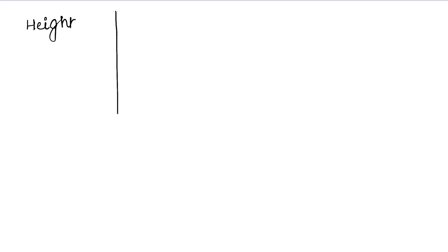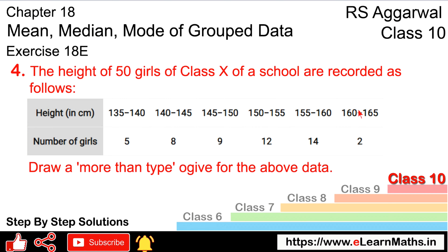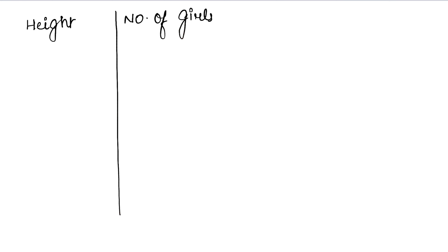We set up a table with height and number of girls. For a more than type ogive, we start from the last class interval's lower limit. So we write: more than 160 — 2 girls.